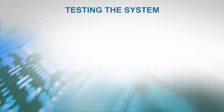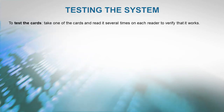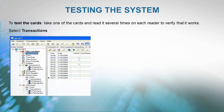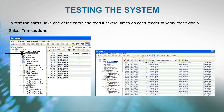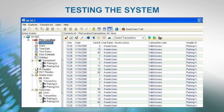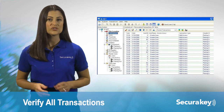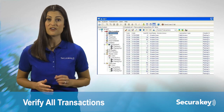Testing the System: To test the cards you have just programmed into your system, take one of the cards and read it several times on each reader to verify that it works. Select Transactions. Look at the transactions — you will see the time, date, card number, user's name if already entered, access group, transaction type, and reader name.